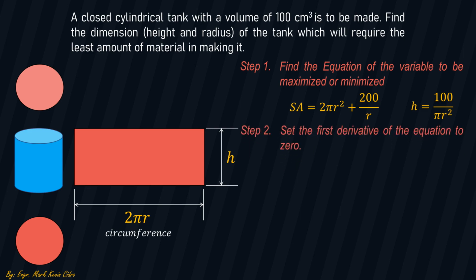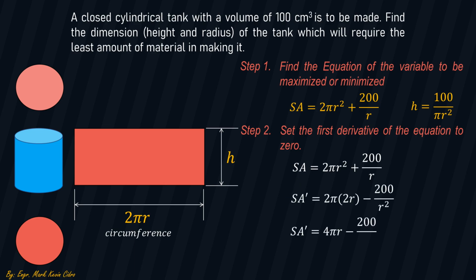Step number two: set the first derivative of the equation to zero. Taking the first derivative of SA = 2πr² + 200/r, we get SA' = 4πr − 200/r². Setting this equal to zero and solving for r, we get r = 2.515 centimeters.